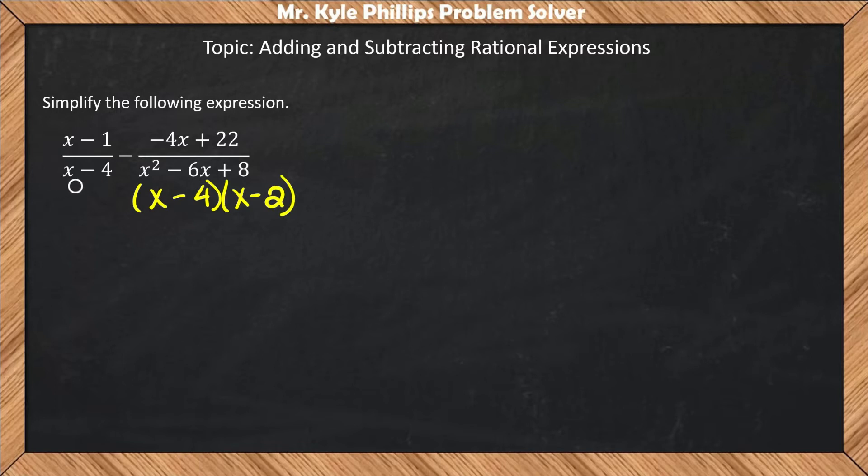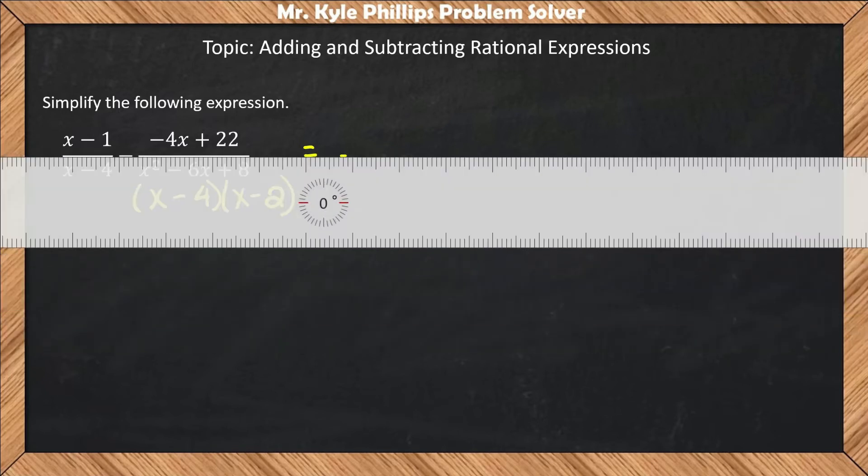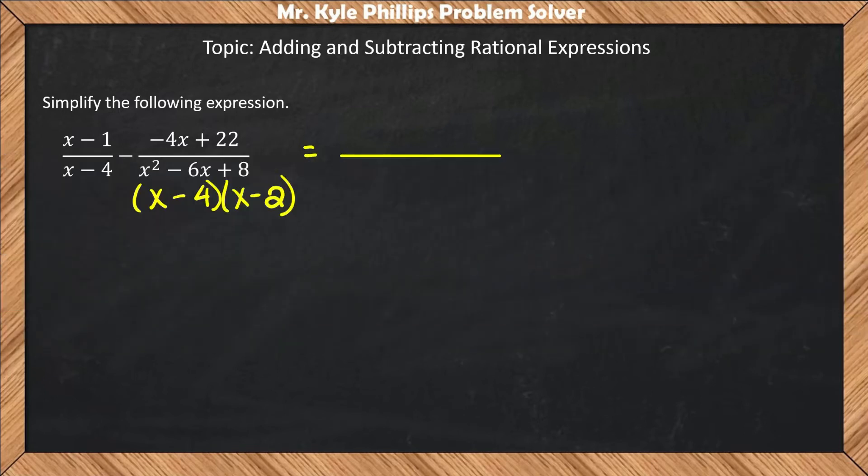So this fraction has the x minus 4, but it's missing the x minus 2. So what we'll do is multiply the numerator by x minus 2. So here, I'll draw this out. This is going to be x minus 1 times x minus 2.